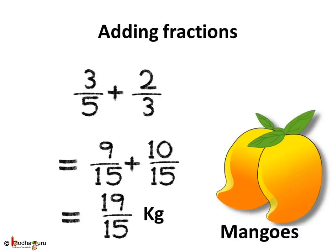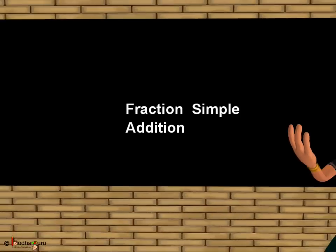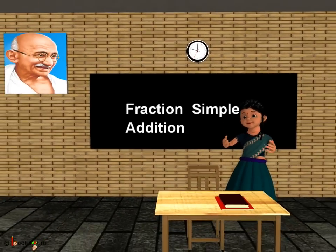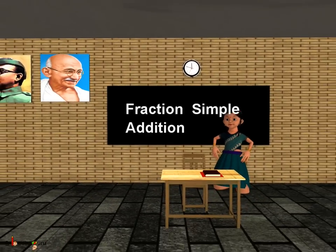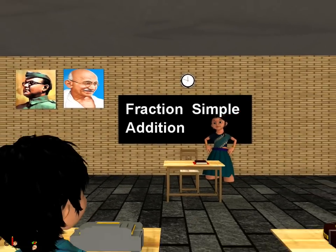So now you know how to add fractions. First, by making the denominators the same in case they are different, as in the case of unlike fractions. And then simply adding the numerators of the two fractions. That's all for now. Bye-bye children.